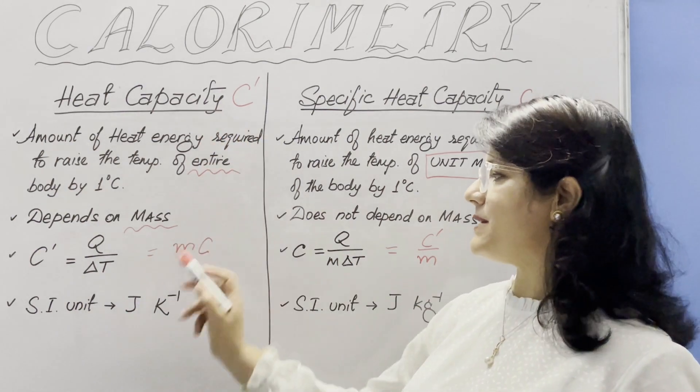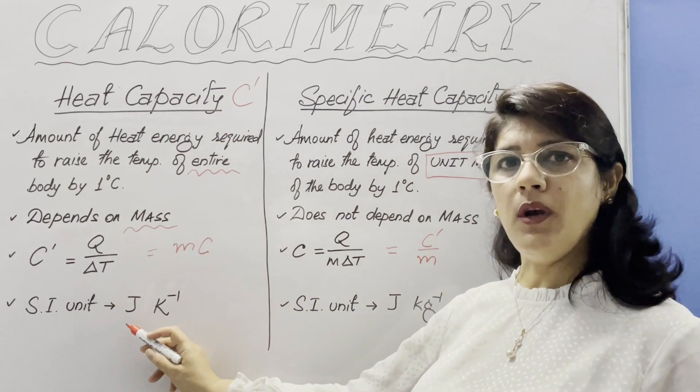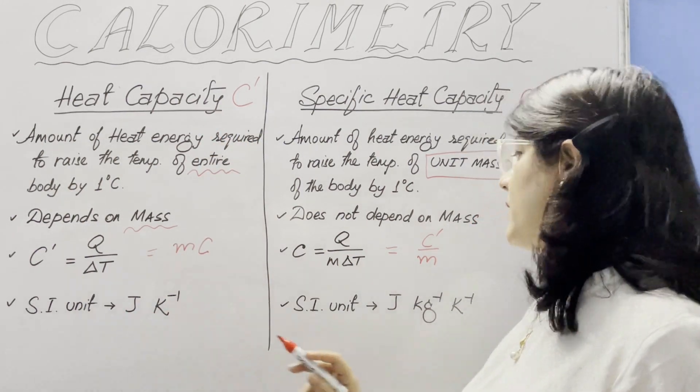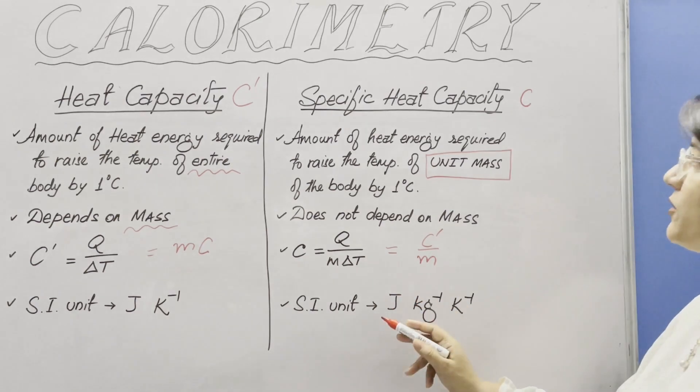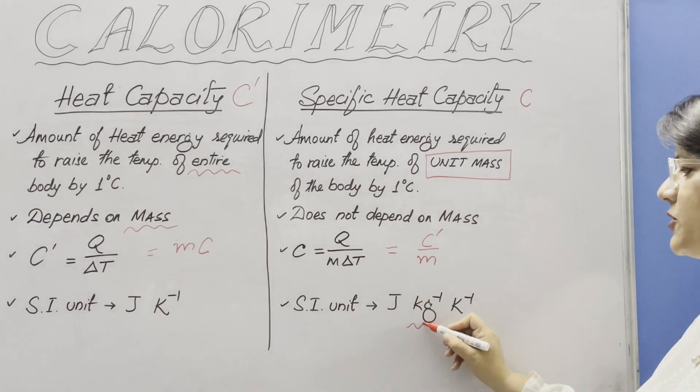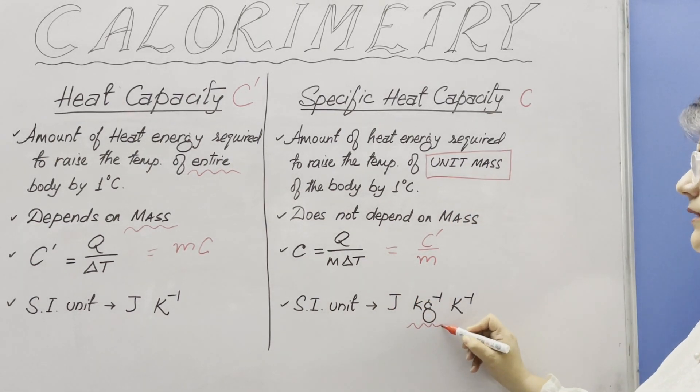The SI unit of heat capacity is Joule per Kelvin, whereas the SI unit of specific heat capacity is Joule per kilogram per Kelvin.